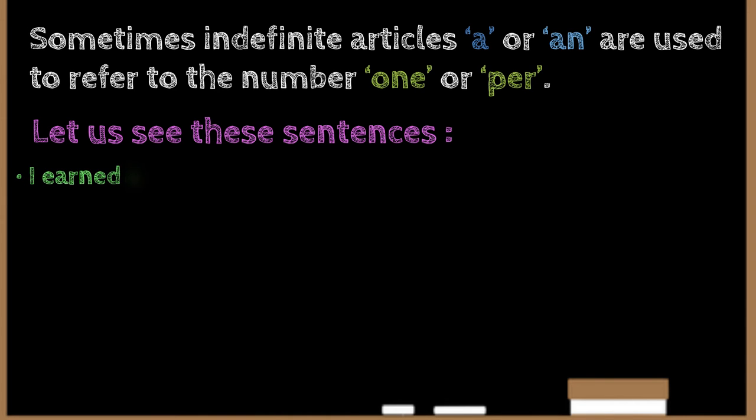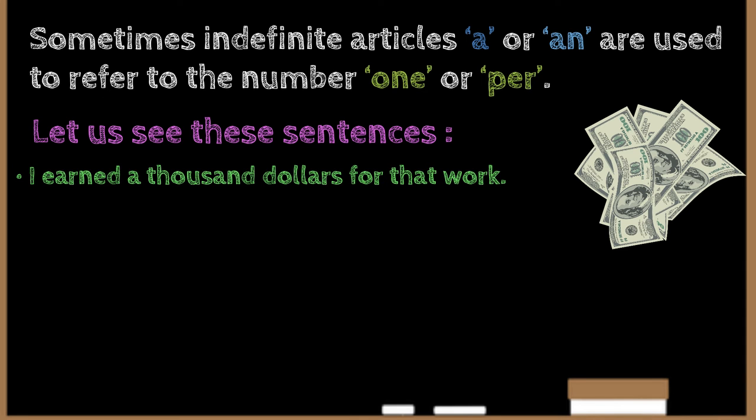I earned a thousand dollars for that work. In this sentence, the article a is used in the sense of one. Let us see the next sentence.